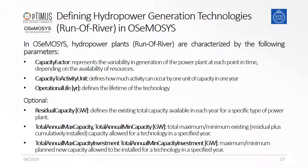Three more parameters that are essential to define runoff river hydropower plants are the capacity factor, the capacity to activity unit, and the operational life. The capacity factor has been discussed before — it indicates the availability of the technology in a certain time slice. In the context of hydropower, this refers to the availability of water.